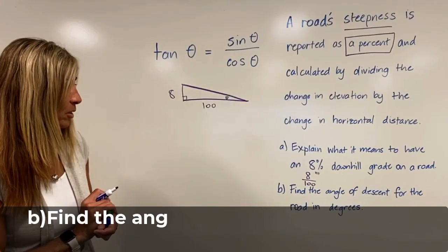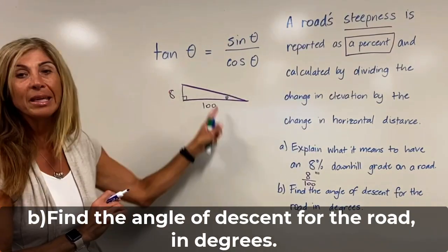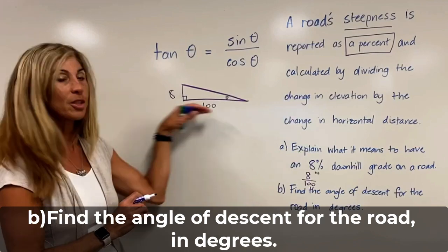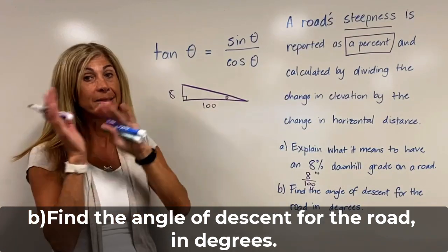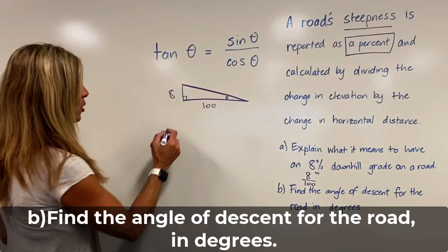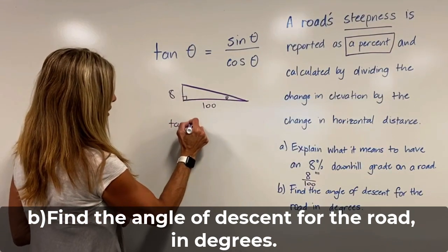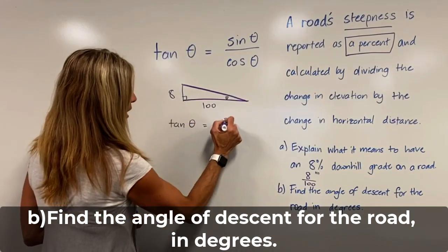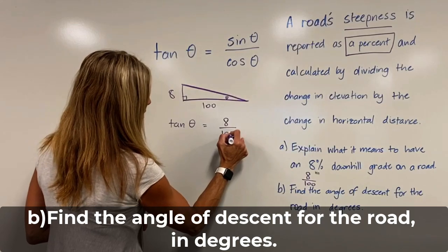B, find the angle of descent. Well, since we have been given the vertical measurement and the horizontal measurement, aka our sine and our cosine of the theta, we know that tangent of theta equals eight divided by 100.